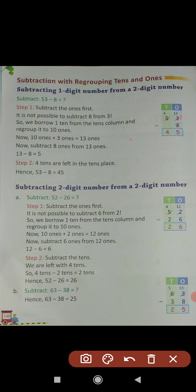So we have to take 1 borrow from 5, because 5 is in the tens place column. When we take 1 borrow from 5, this 5 converts into 4 (5 minus 1 equals 4), and this 3 converts into 13. Now subtract 8 from 13: 13 minus 8 equals 5. The 4 remains in the tens place column with nothing to subtract, so 4 comes directly in the tens place. Answer: 45. Hence 53 minus 8 equals 45.